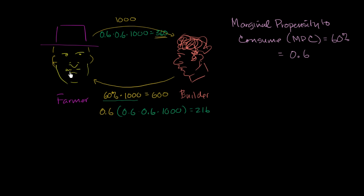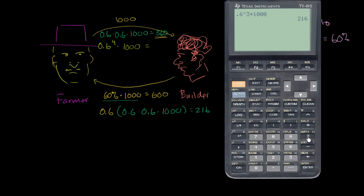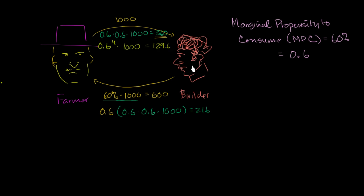So this person says, 'Hey, I got another $216. I'm going to spend 60% of that.' And I think you see where this is going. 60% of $216 is 0.6 times the whole quantity — that's 0.6 to the fourth power times $1,000, which is 60% of $216. That comes out to $129.60. And then that person spends 60% of that, and it goes on and on.